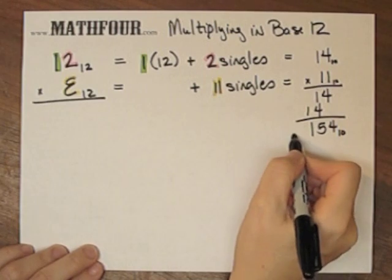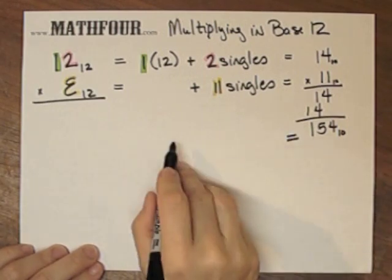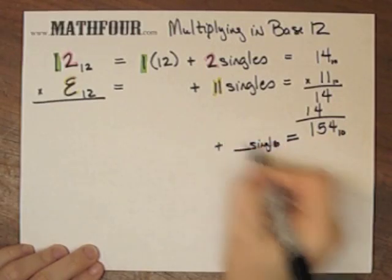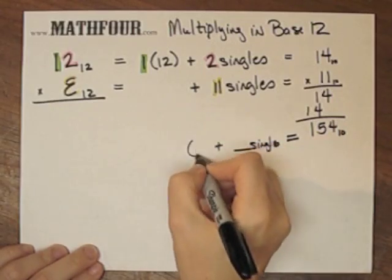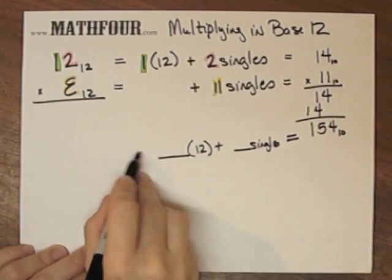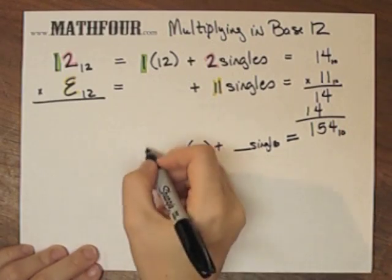I can convert back. What is this in singles and sets of 12, and if I have any more, then sets of 144.